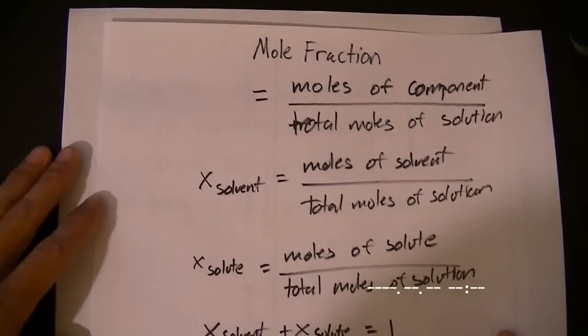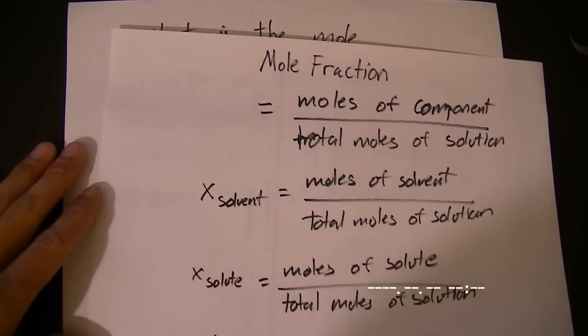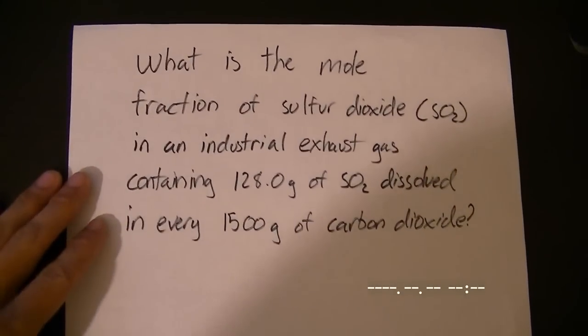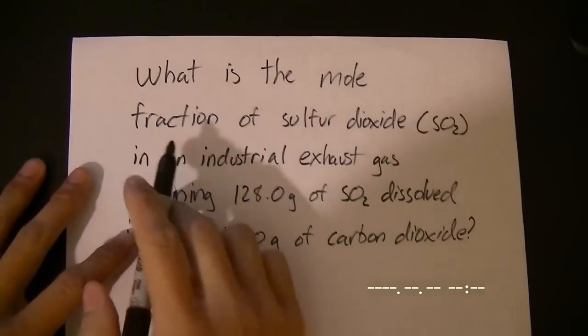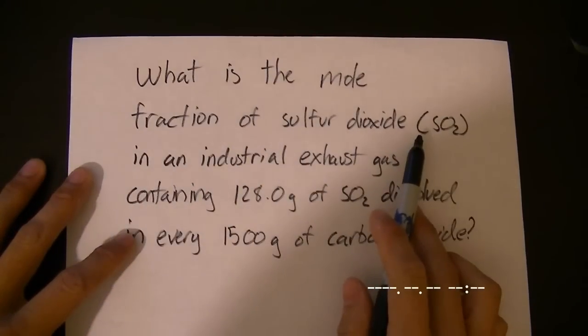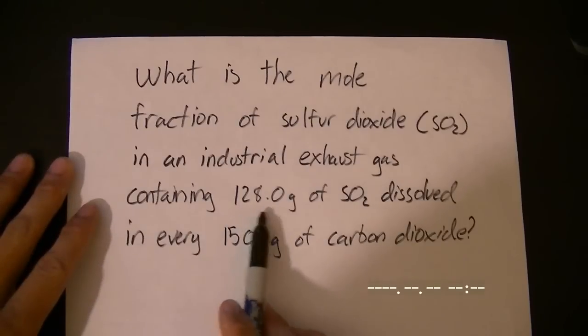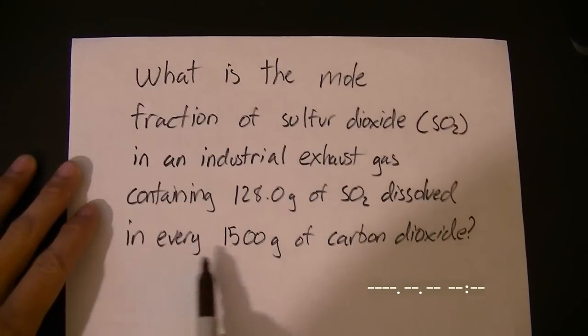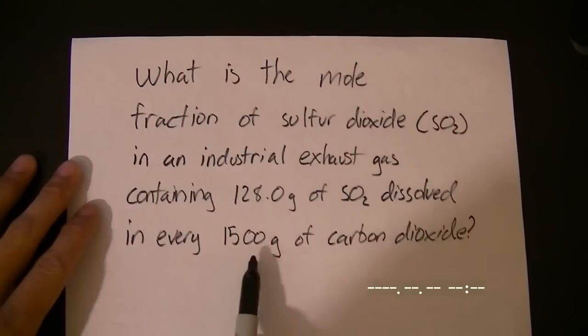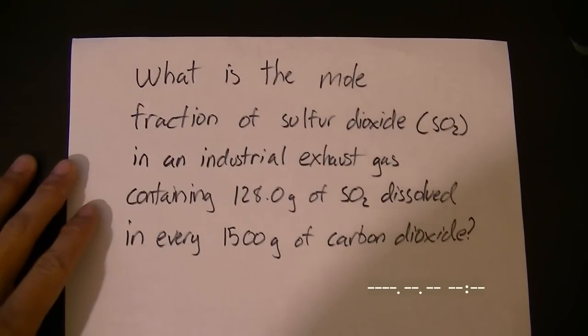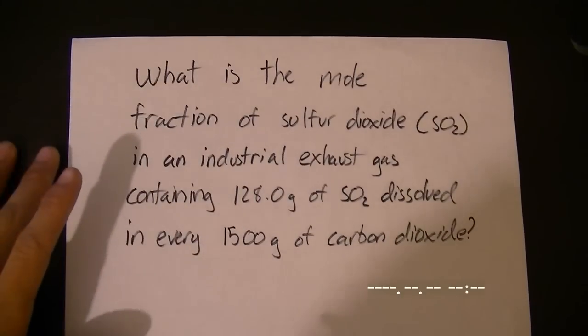Here's a little practice problem for you to try out and to come to class with the answer with. In terms of the mole fraction, what is the mole fraction of sulfur dioxide, SO2, in industrial exhaust gas containing 128 grams of SO2 dissolved in every 1500 grams of carbon dioxide? The first thing to do is to recognize which is the solute and which is the solvent. I'll leave that up to you.